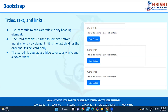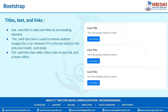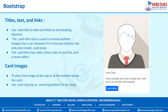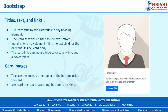The dot card-link class adds a blue color to any link with a hover effect. For card image, to place an image at the top or bottom inside the card, use dot card-img-top or dot card-img-bottom. If you want to display an image at the top use 'top'; at the bottom use 'bottom'. Now let's start the practical implementation.